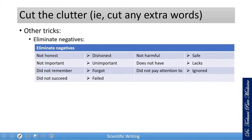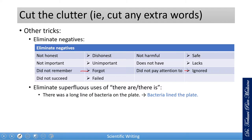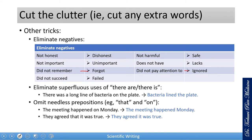Other tricks: eliminate negatives — they are unclear and take more space. 'Not honest' → 'dishonest.' 'Do not remember' → 'forget.' 'Do not pay attention to' → 'ignored.' 'Do not succeed' → 'failed.' Eliminate superfluous uses of 'there are' / 'there is' — 'There was a long line of bacteria on the plate' can simply be 'Bacteria lined the plate.' Omit needless prepositions like 'that' and 'on' — 'The meeting happened on Monday' → 'The meeting happened Monday.' 'They agreed that it was true' → 'They agreed it was true.'